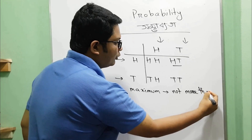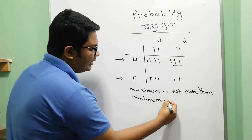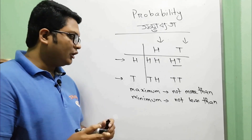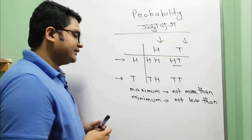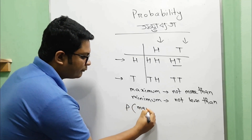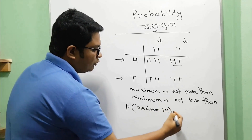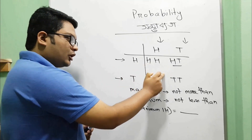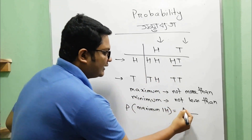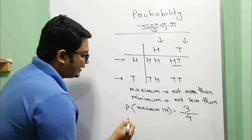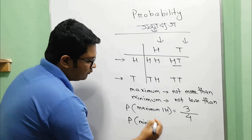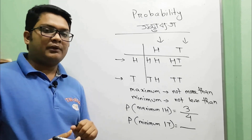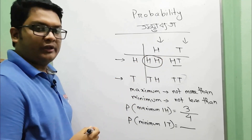This is not more than, and this is not less than, but not more than, but not less than. So we can see the probability of maximum 1H, not more than 1. We can see the probability of 1H, which is not less than, and the probability of 2H.